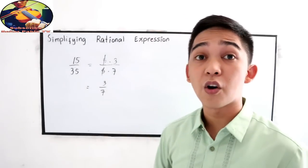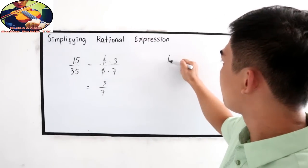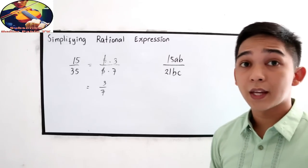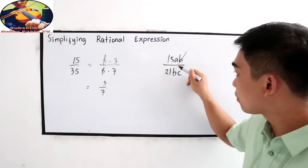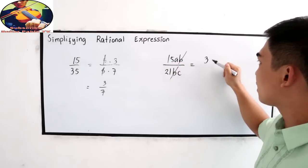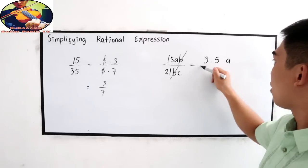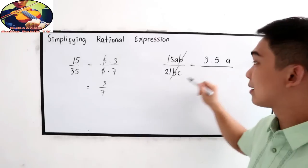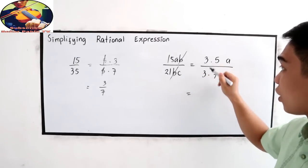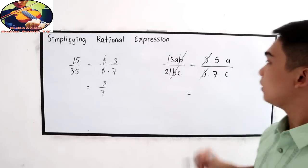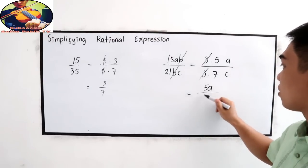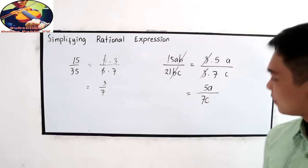Let's say we have 15ab all over 21abc. Obviously, we can cancel the b by the laws of exponent. So we now have factors of 15 are 3 times 5a, over factors of 21 is 3 times 7, and copy c. Now, 3 over 3, this will be equal to 1. 5 over 7 cannot be simplified, so our final answer is 5a over 7c.